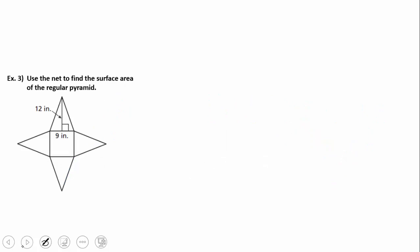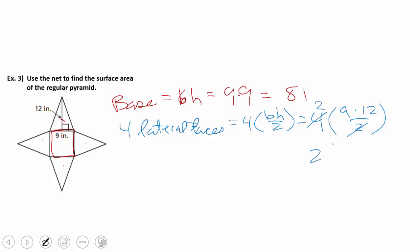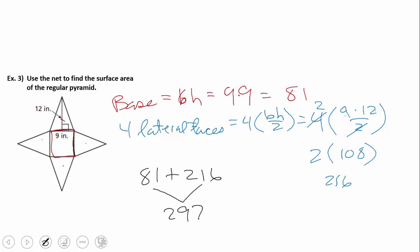Example 3: use a net to find the surface area of a regular pyramid. The base is a square, so I highlight it in red. Base area equals 9 times 9 equals 81. Knowing it's a square base tells us we have four lateral faces, all the same size. Lateral faces: 4 times (9 times 12) divided by 2. That's 4 times 108 divided by 2, which equals 216. Total surface area: 81 plus 216 equals 297 inches squared.